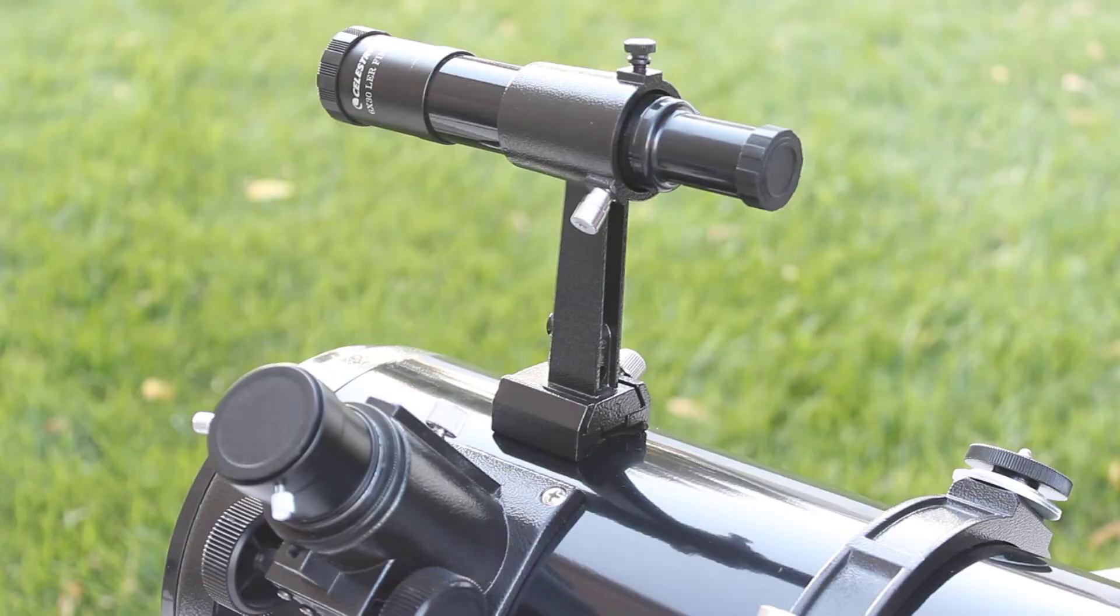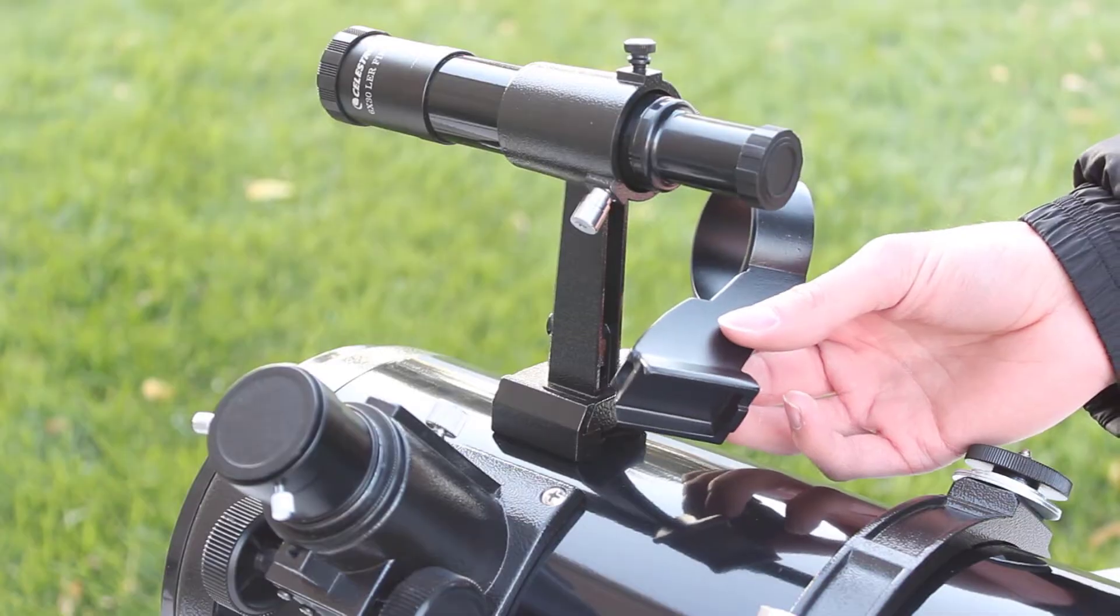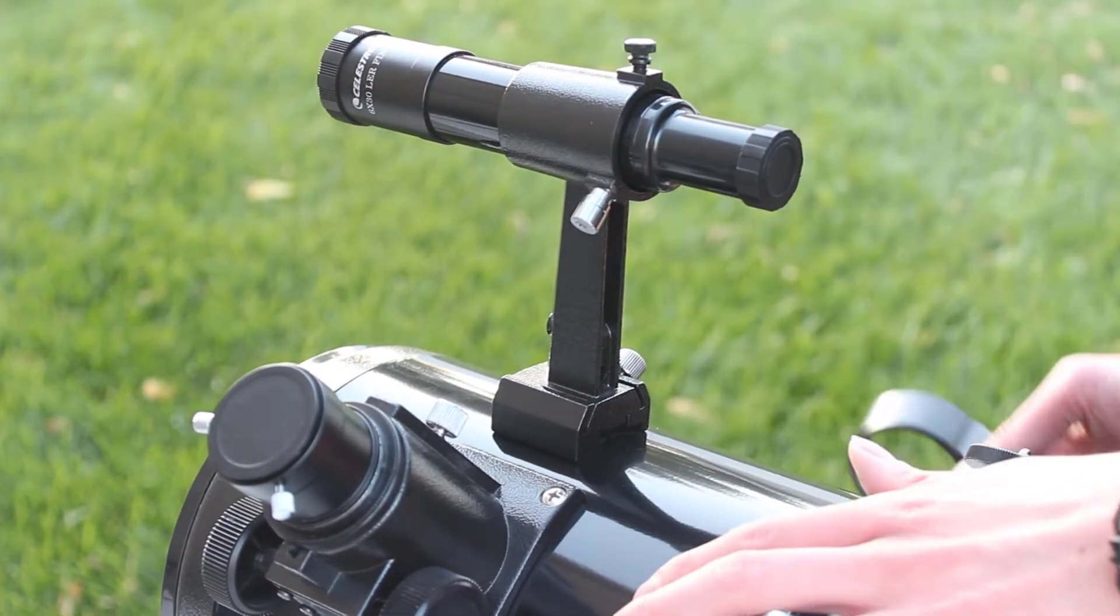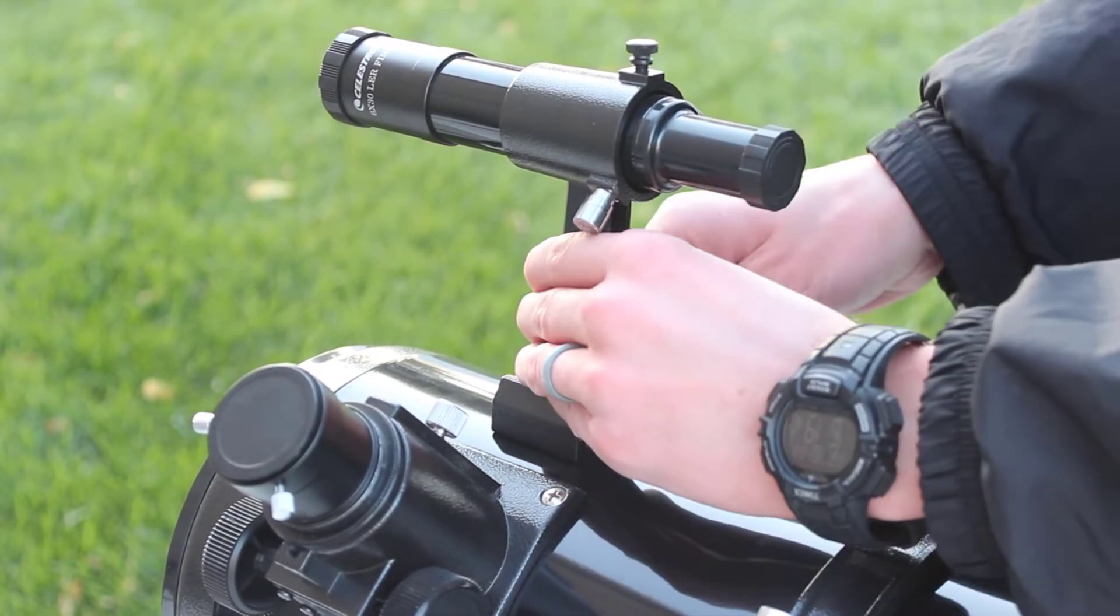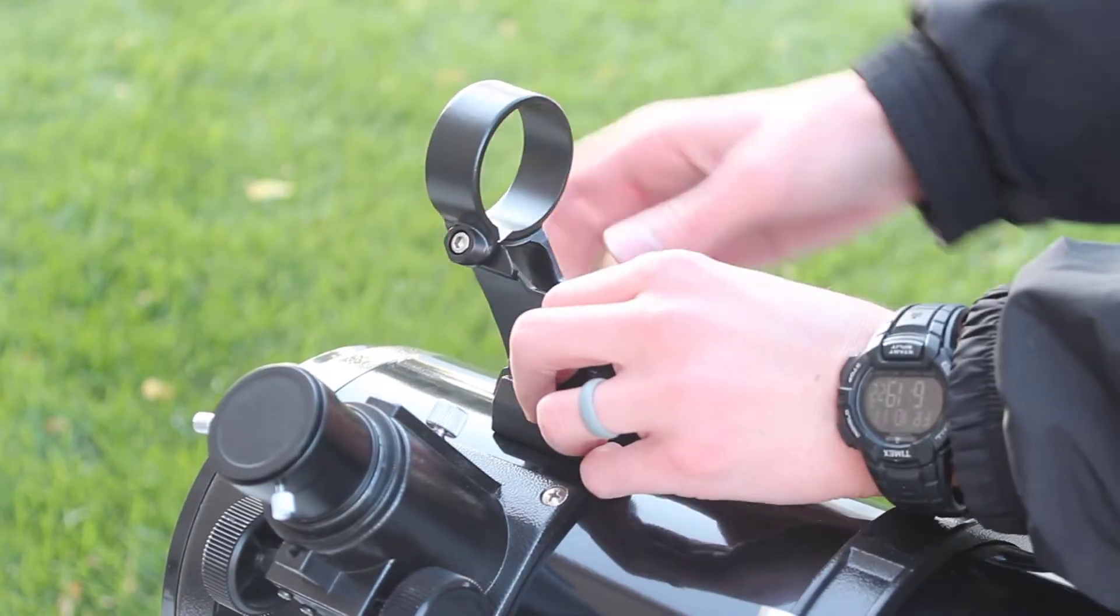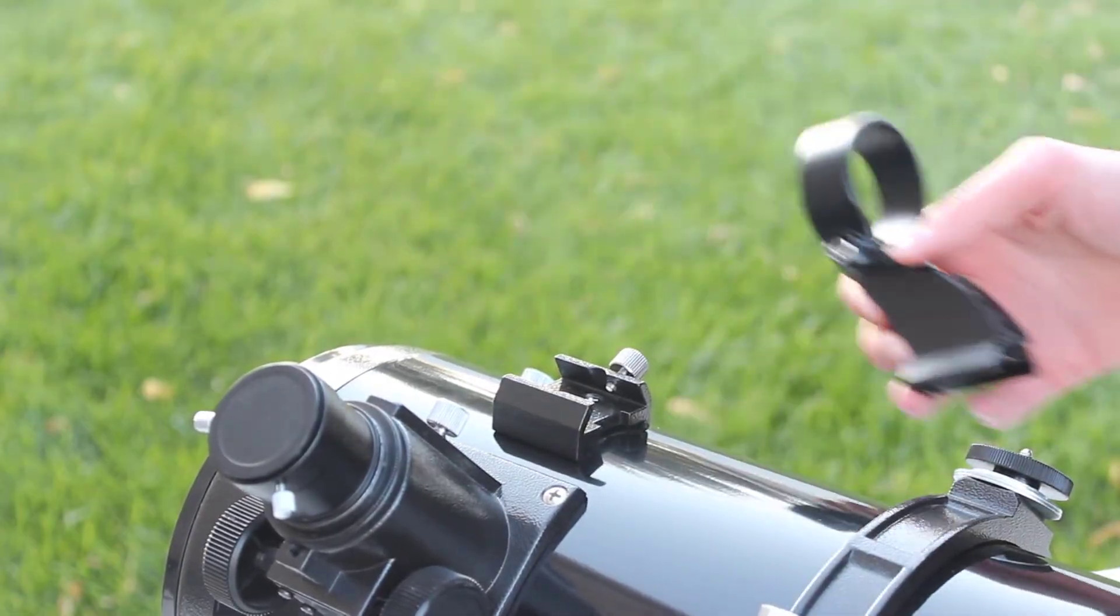What's also really neat about the StarSense is it comes with a standard Vixen style finderscope bracket. So if you want to use the StarSense on like a Newtonian or a refractor or any telescope that uses a standard bracket, you definitely can. Just remove my finderscope and it will pop right in and secure. I'll show you how to swap them out too.